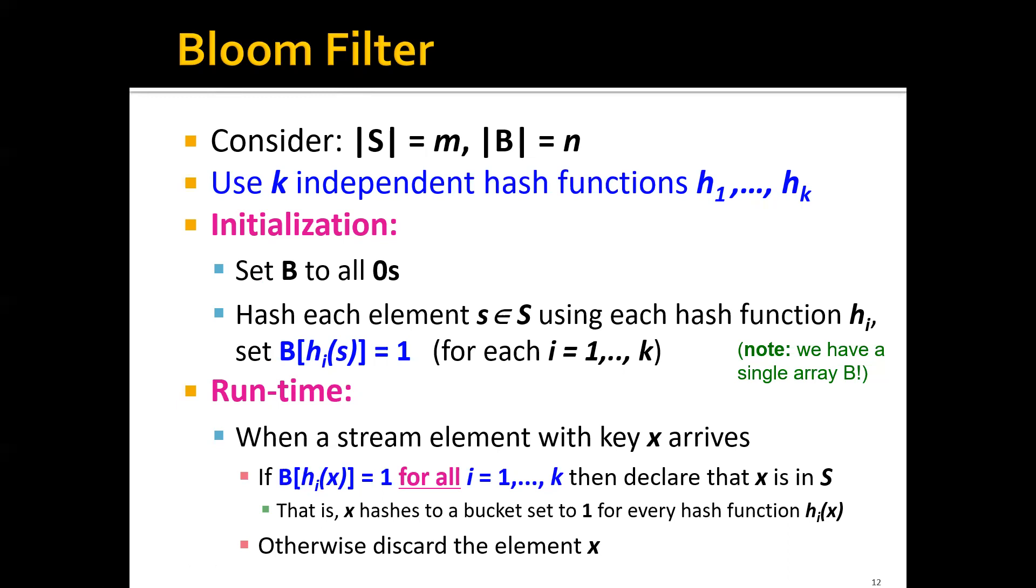In this algorithm, during the initialization phase, we will set the bit array B as an array of all zeros. Then for each element s in the set S, we will use each of the hash functions and hash this element into some entry of this bit array, and set this entry to one. Note that we have multiple hash functions, so for each element in the set, we will probably have multiple ones. Although we have multiple hash functions, we have one single bit array.